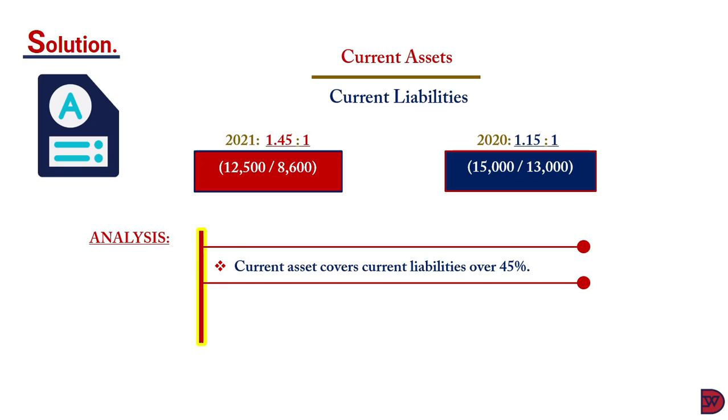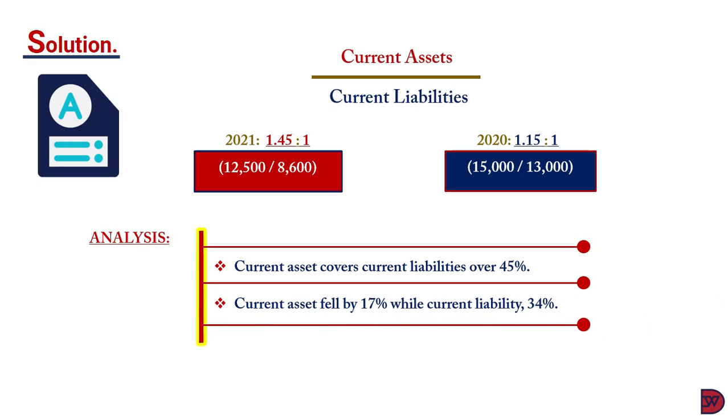When we analyze this, we realize that the current asset can cover the current liabilities and have an excess of 45% of the current liabilities. Also, we realize that the current asset fell by just 17% while the current liabilities fell by 34%, the reason why the current ratio increased from 2020 to 2021. Again, we have to find out whether there wasn't any underhand dealing or any manipulation that led to the current ratio increasing, and it was just due to business activity.